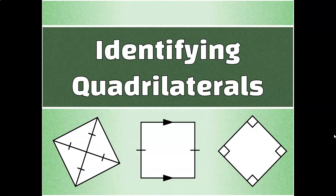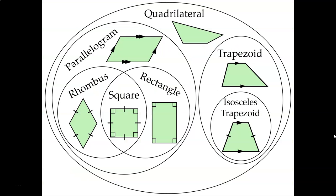Let's talk about how to identify quadrilaterals based on their unique characteristics. In the previous videos, we've learned how to differentiate between different types of quadrilaterals. There are parallelograms that have two pairs of parallel sides, and trapezoids that only have one pair of parallel sides. And within each of these categories, there are special versions of each of those shapes.